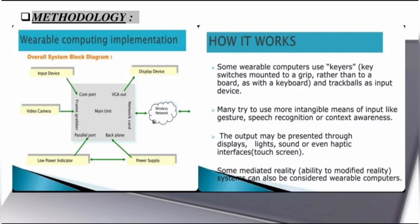Wearable Computing Implementation: The block diagram of wearable devices shows that wearable variants tend to have sensors which can detect, monitor, and track various things. Along with input through devices, wearable computers also take input through resources like gesture, speech recognition, or context awareness. Most sensors can track motion and various other activities of the body, such as activity of the brain, heart, and muscle. Some wearable computers use gears and trackballs as input devices.